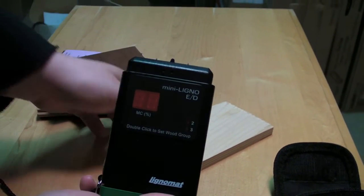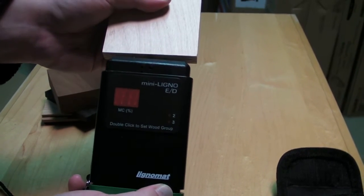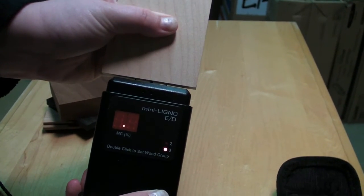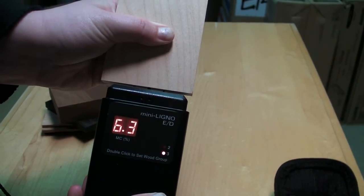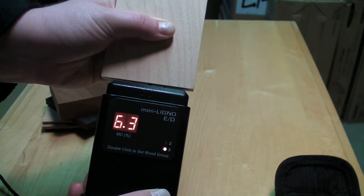To take a reading, simply push the pins into the wood. A red digital number will appear, indicating the moisture percentage in this particular piece of wood.